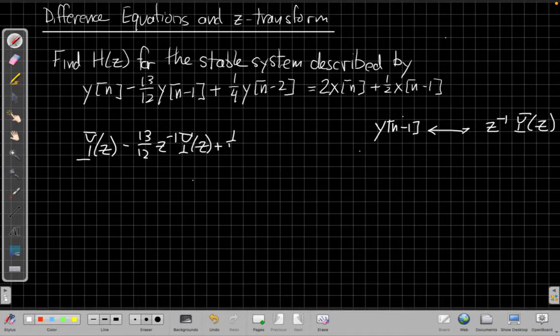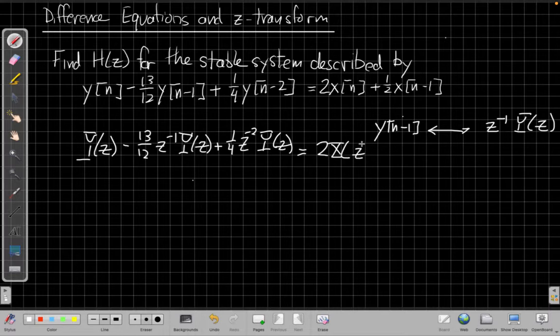The Z-transform in the next term is plus (13/12) times z^(-1) Y(z) plus (1/4) times z^(-2) Y(z), and all this is equal to 2X(z) plus (1/2)z^(-1)X(z).